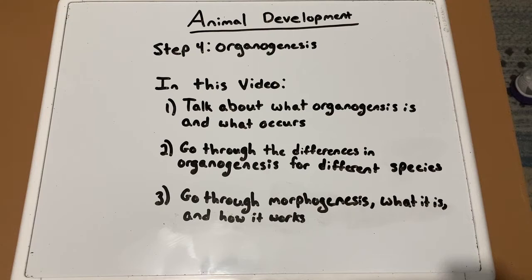Specifically, we will talk about what organogenesis is and what occurs during this process, go through the differences in organogenesis for different species such as chicks, which are vertebrates, and insects, which are invertebrates, and lastly, we'll go through morphogenesis, what it is, and how it works.